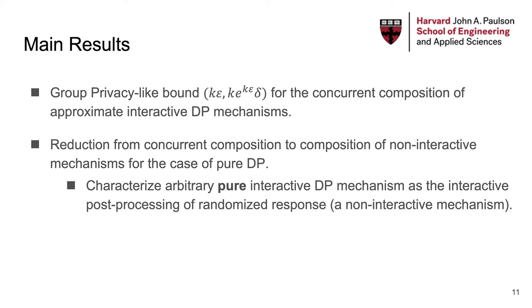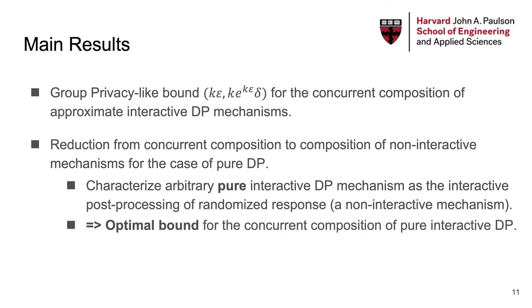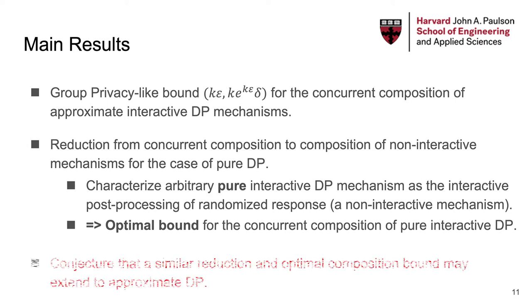We then characterize a pure interactive DP mechanism as a post-processing of randomized response — a non-interactive mechanism — and obtain the optimal privacy bound for the composition of pure interactive DP by taking the optimal composition of non-interactive differential privacy, since DP is closed under post-processing. Unfortunately, we still don't know much about the concurrent composition of approximate interactive DP. We believe the bounds we got are far from the correct answer, but based on computer simulation, we conjecture that the optimal composition bound may also hold for approximate DP.